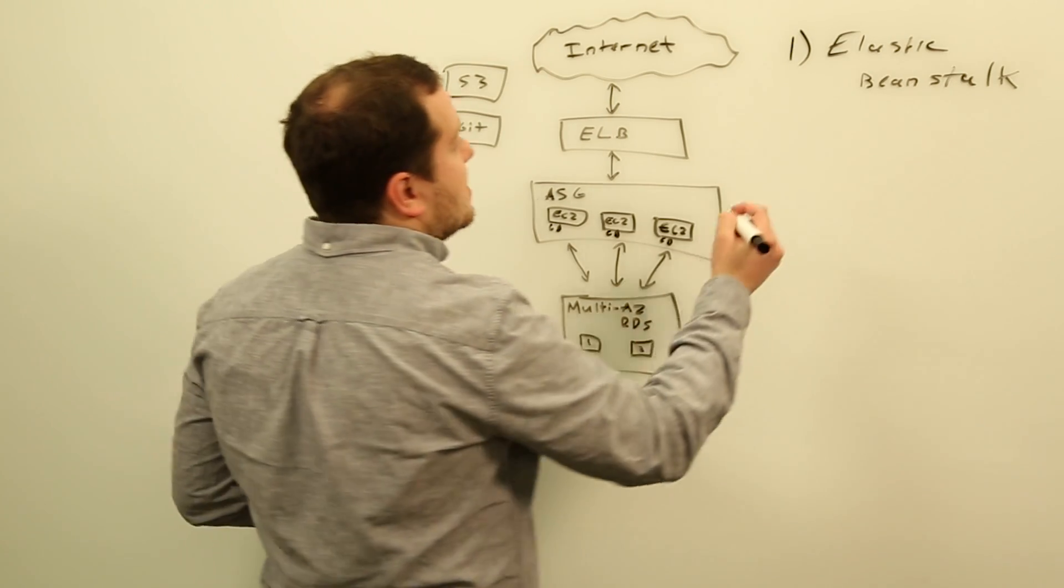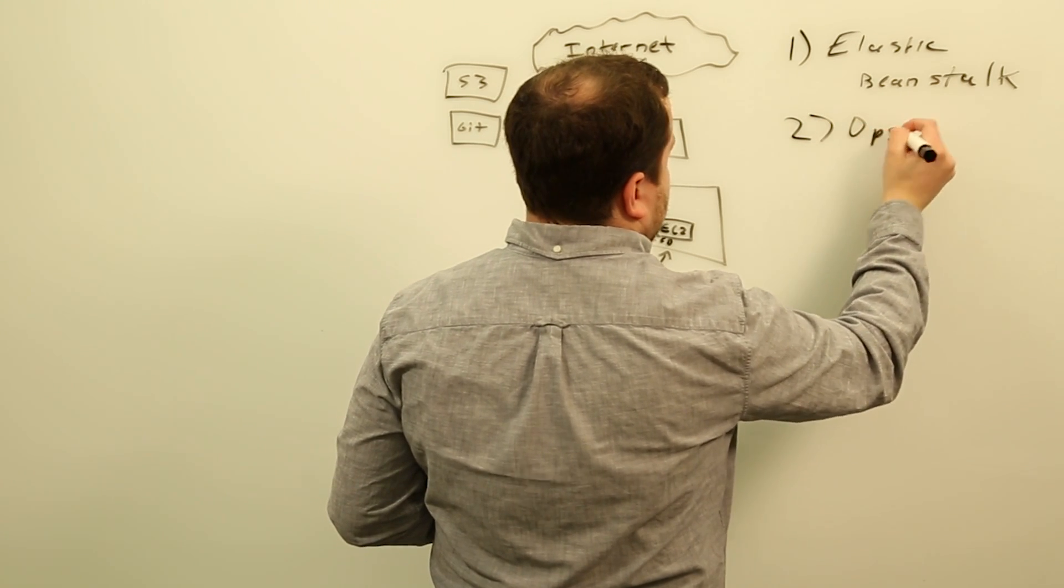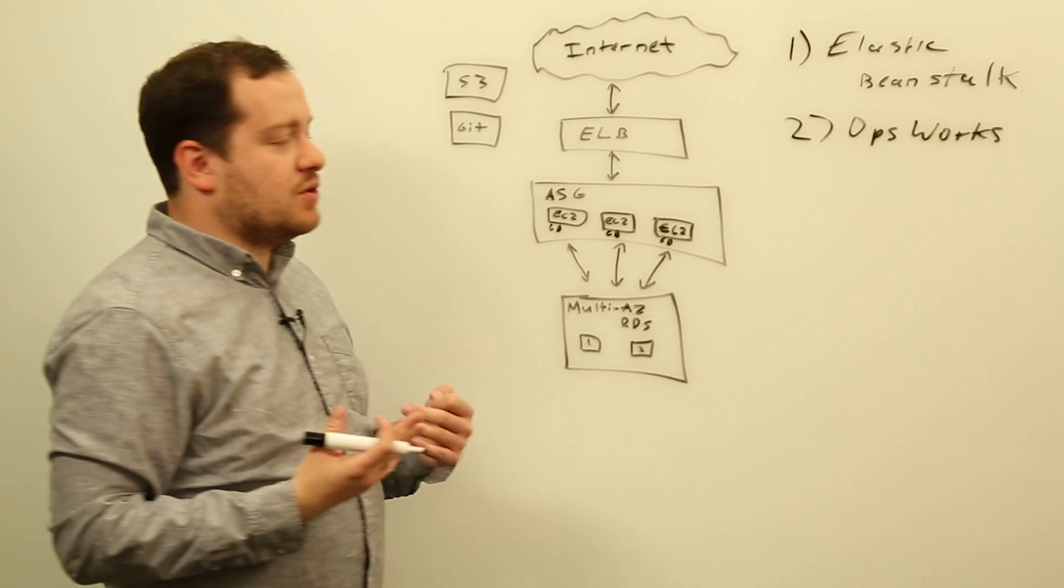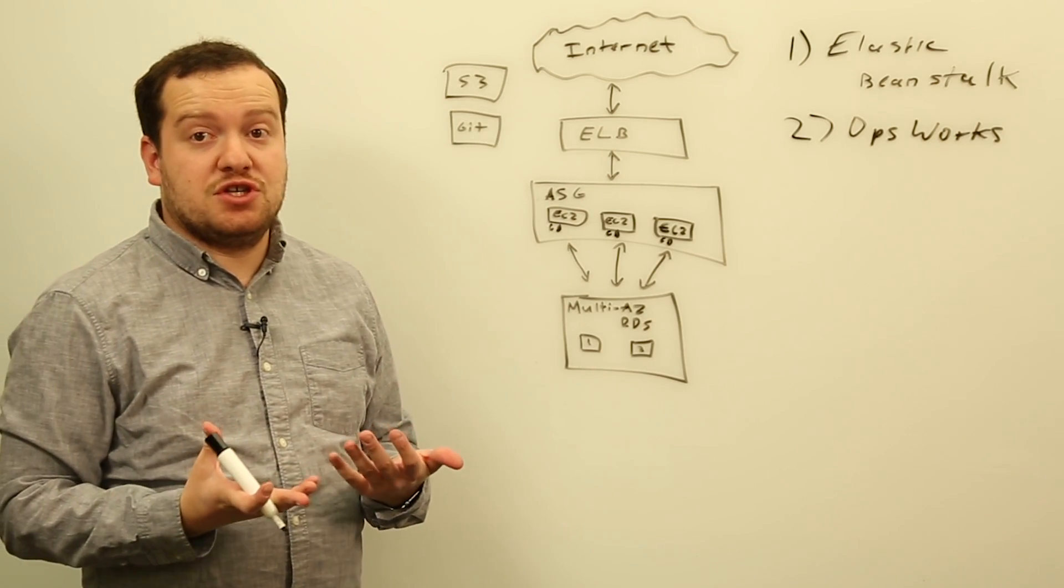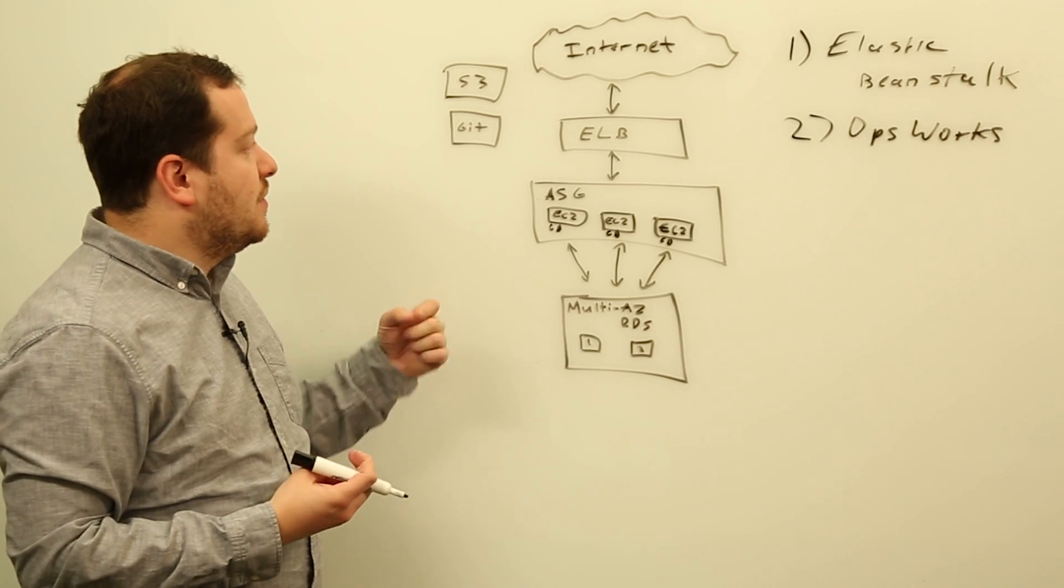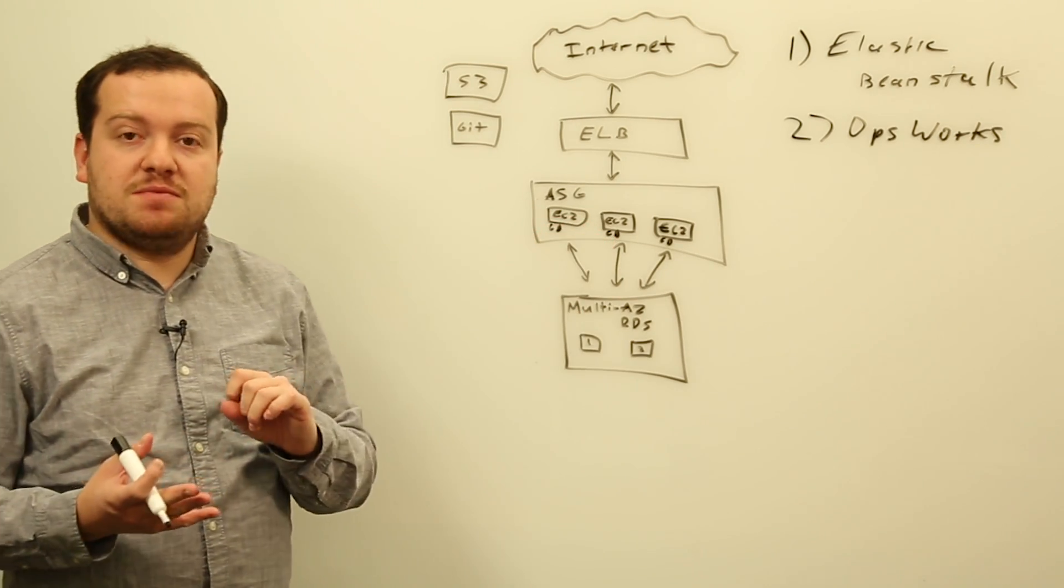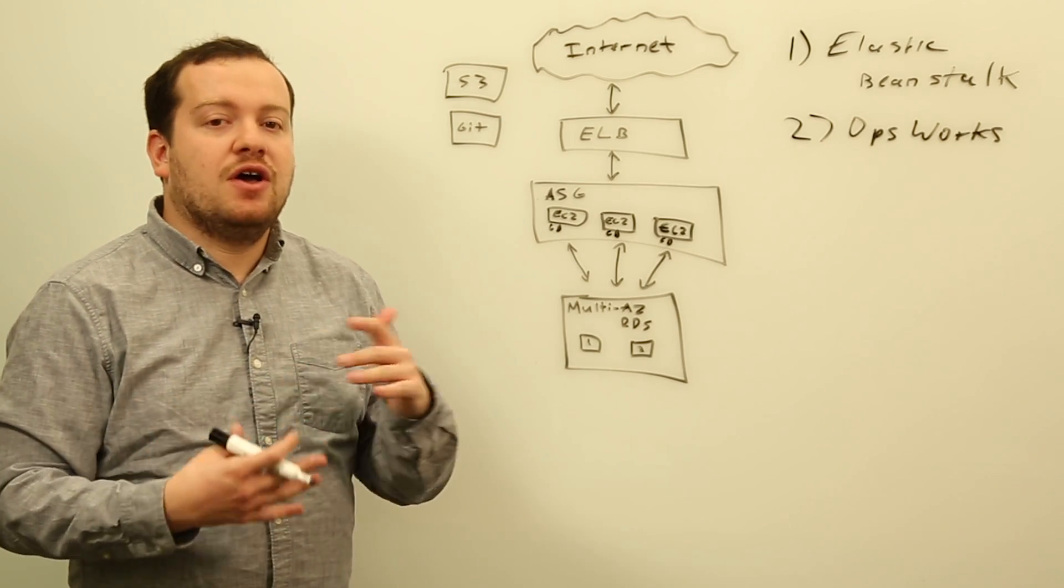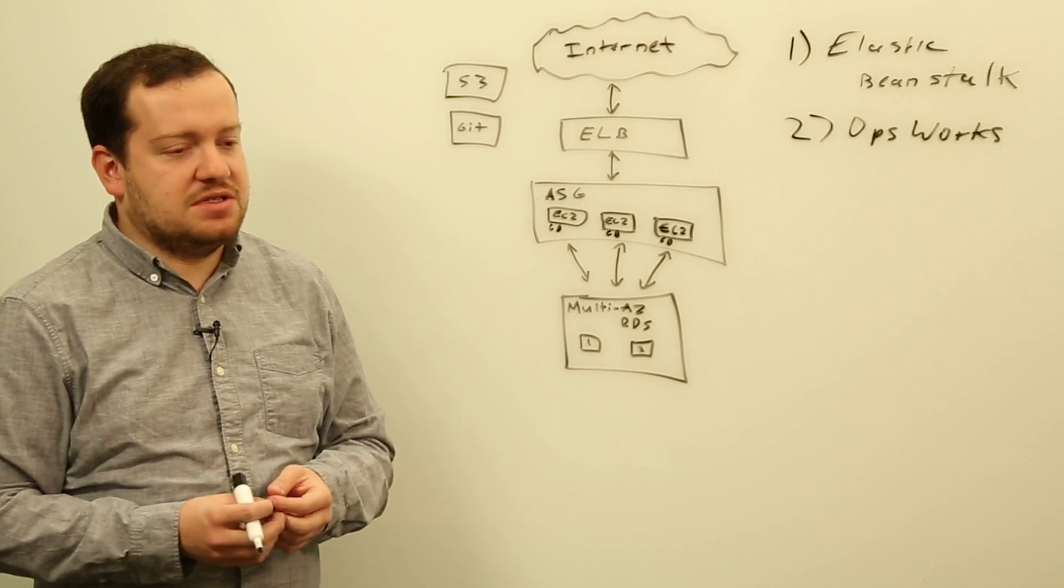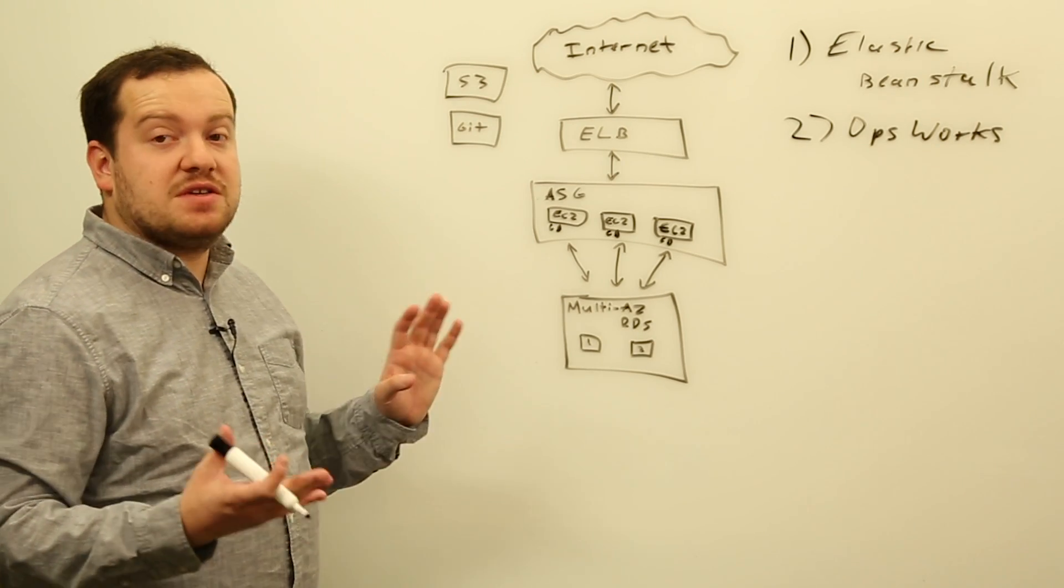The second option is AWS OpsWorks. So OpsWorks is great for those who are familiar with the Chef Configuration Management System. What OpsWorks will do is it can actually use Chef recipes, and those Chef recipes could be ones that you write yourself, or it could be something you get from the internet, from existing repositories or recipes.